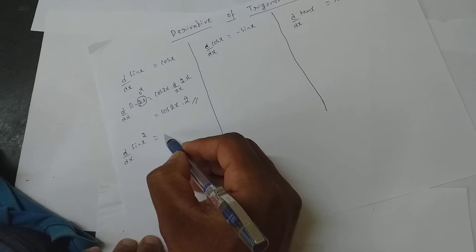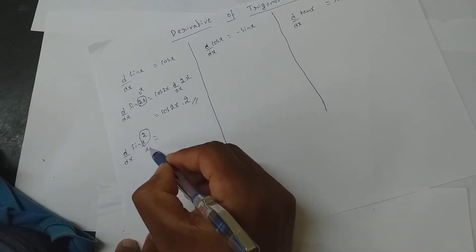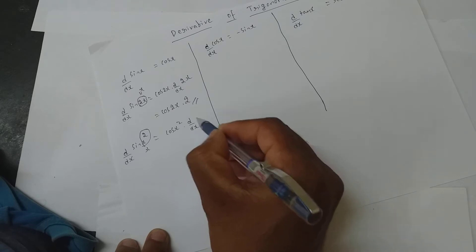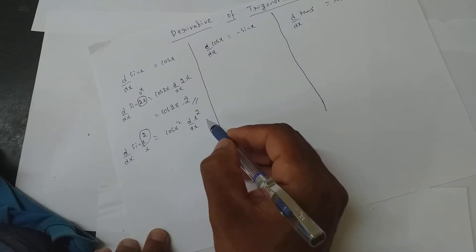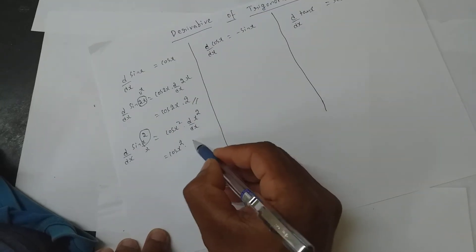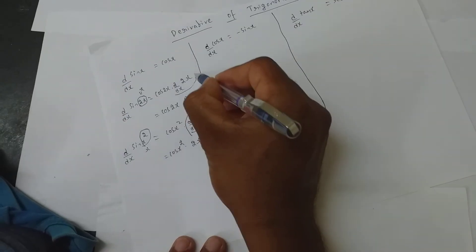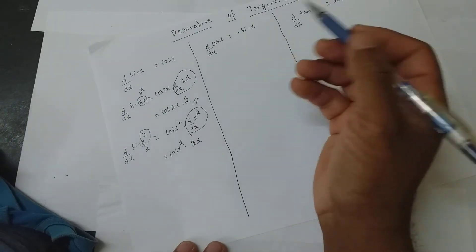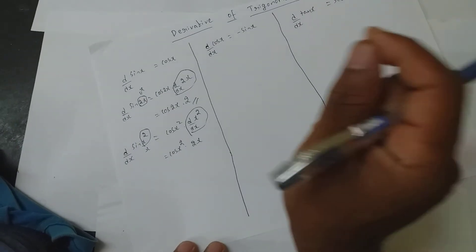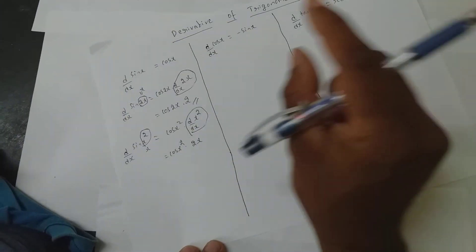Now if it is d/dx of sine x square, I cannot differentiate it directly — I will assume it to be x. So sine x is cos x, so it becomes cos of x square into whatever you assumed in place of x. So it becomes cos of x square into 2x, since the derivative of x square is 2x. This is where students miss — please don't forget: whatever you are assuming in place of x, apply its derivative at the end.